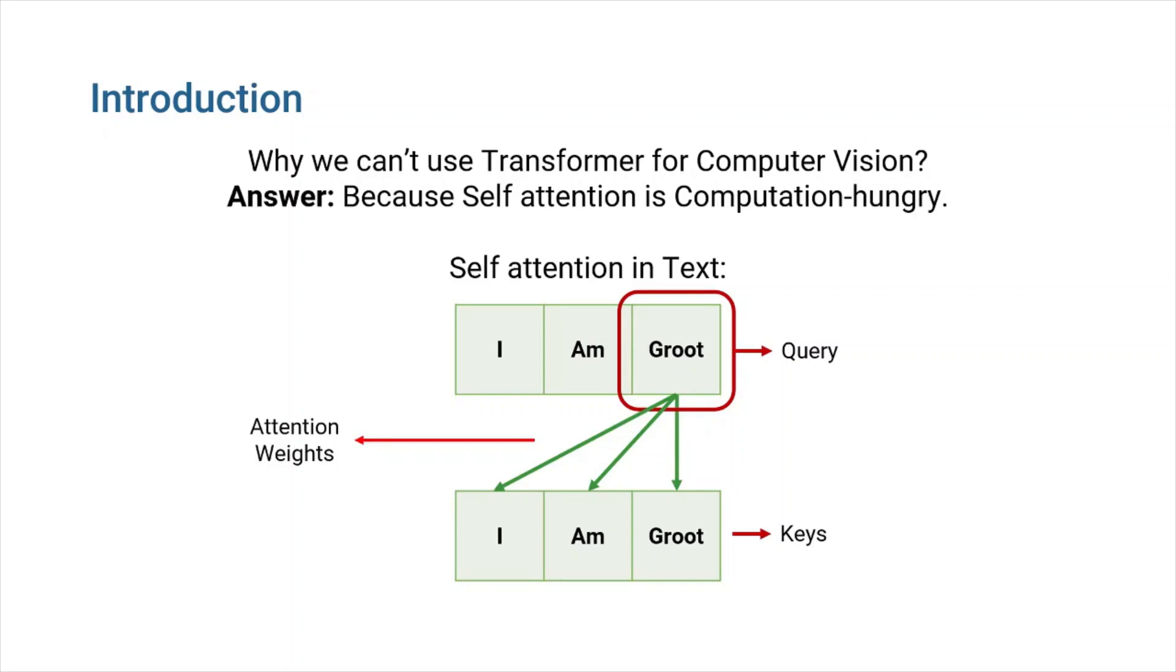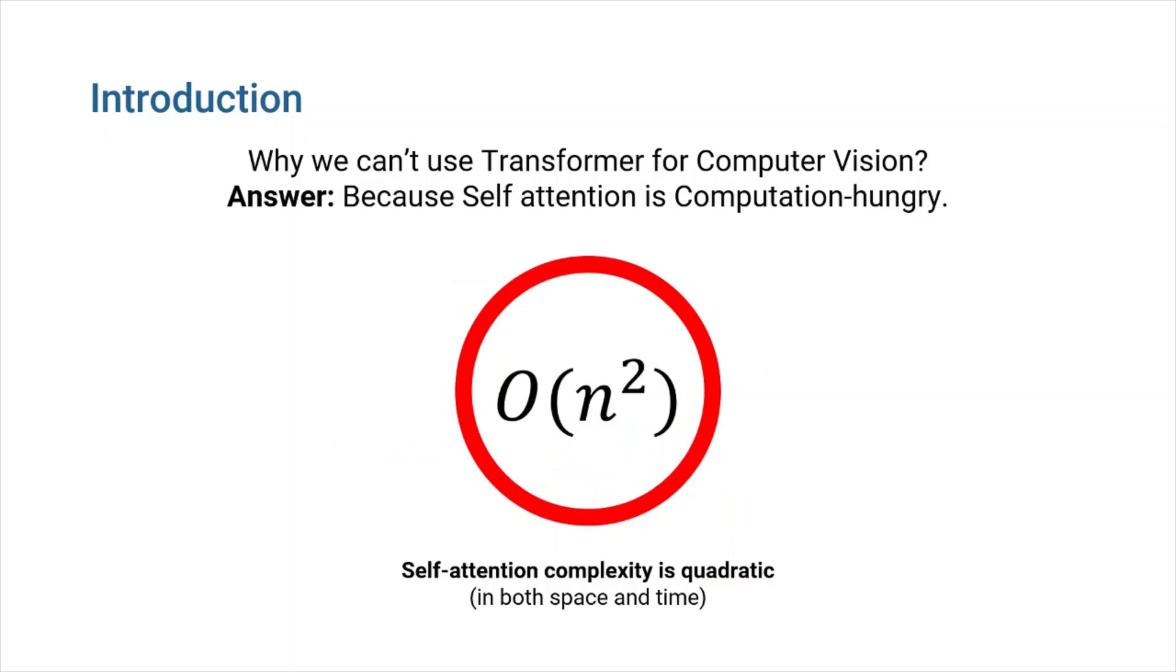The reason is transformers heavily use self-attention and self-attention is really computation-hungry. Consider this simple three-word sentence. Using each word as the query, we should calculate an attention weight between that word and every word in the sentence. Which means, for a three-word sentence like this example, we will have to calculate 9 attention weights. And for an N-word sentence, we will have to find N squared attention weights. As you can see, the computational complexity of self-attention is quadratic.